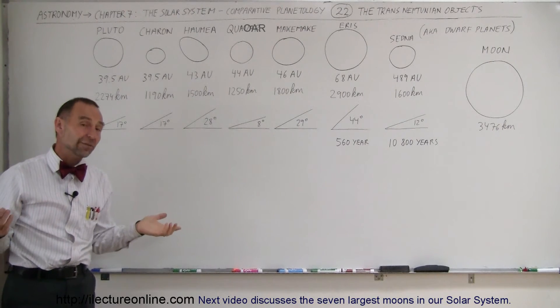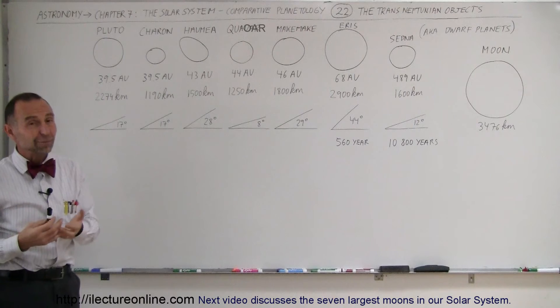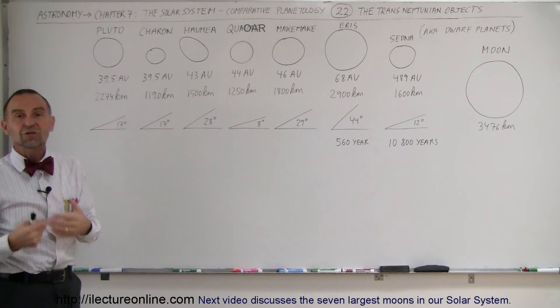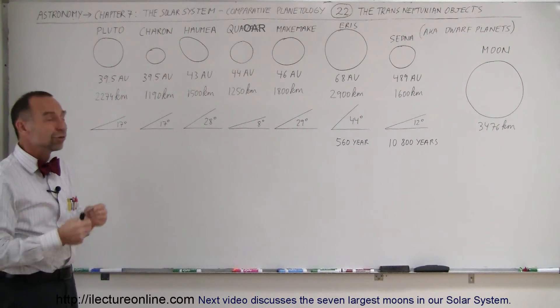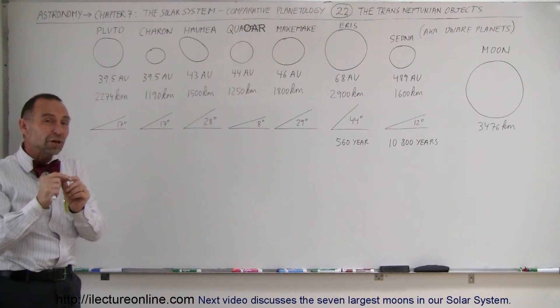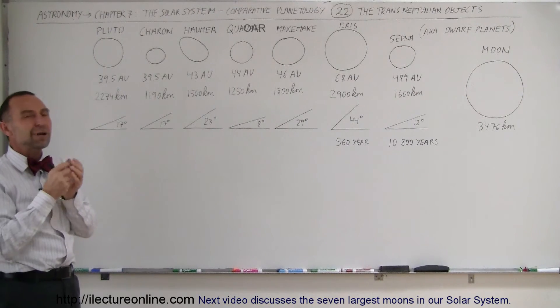Now, how many of those trans-Neptunian objects are out there? The estimate is that it's probably at least 1,000 of them. We just have to find them. They're very difficult to find. They're so far away and typically so small that they can be barely detected.